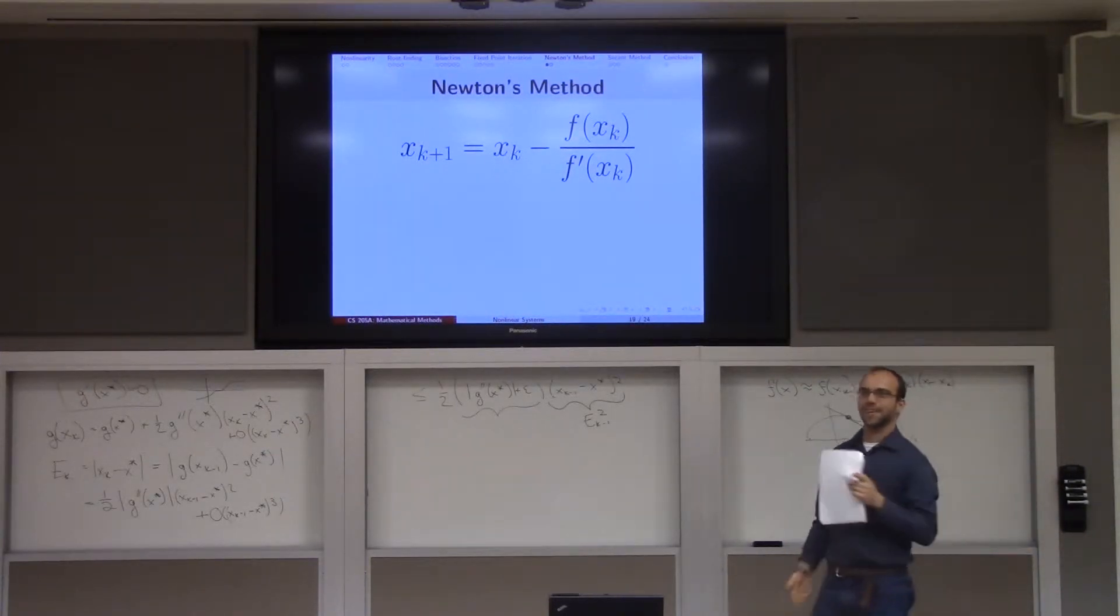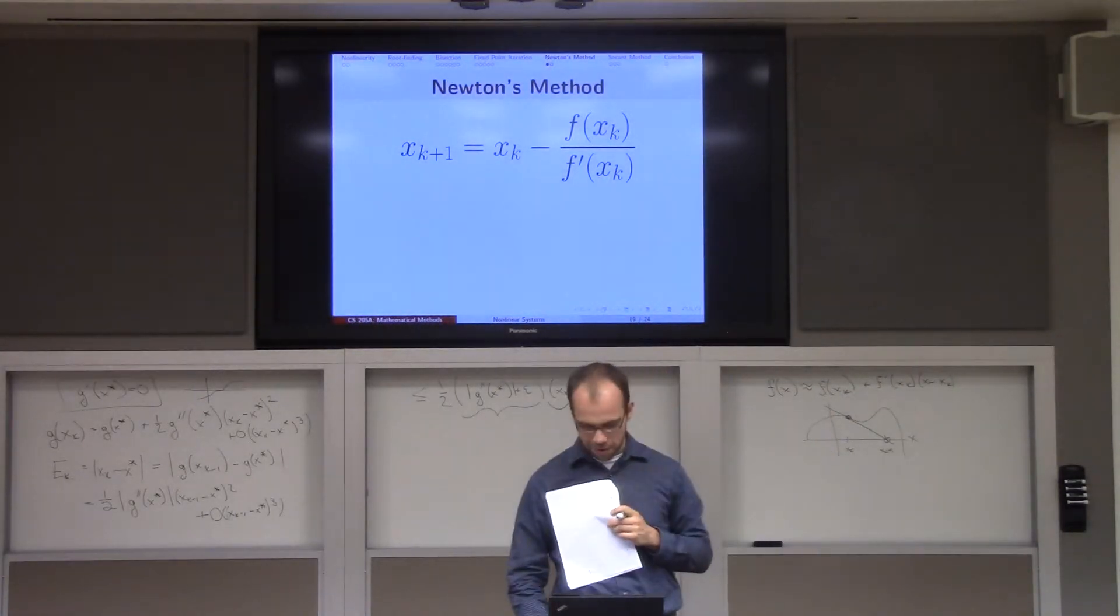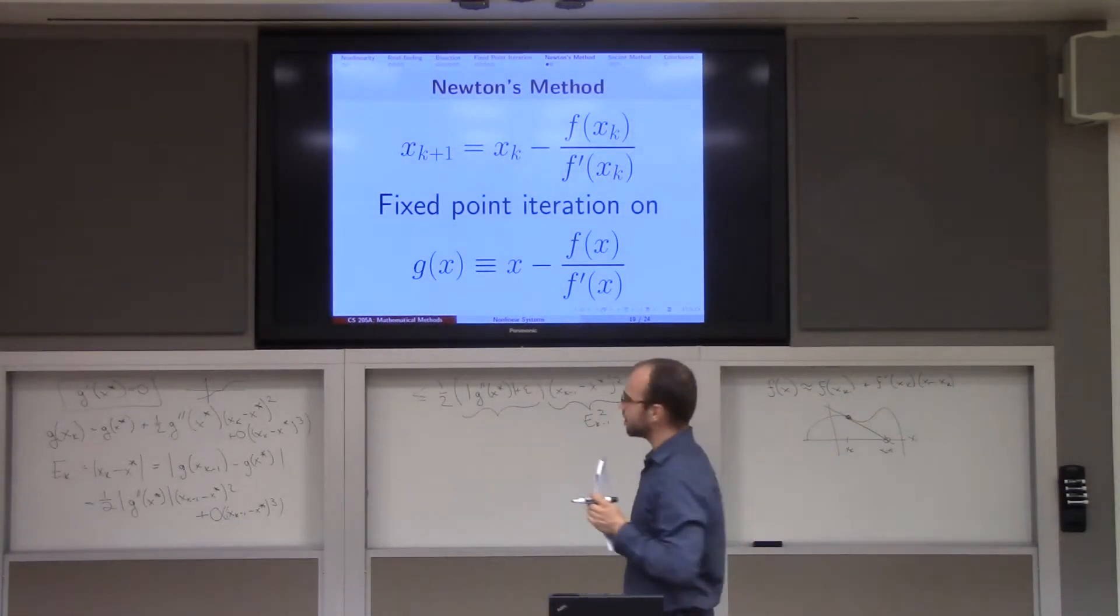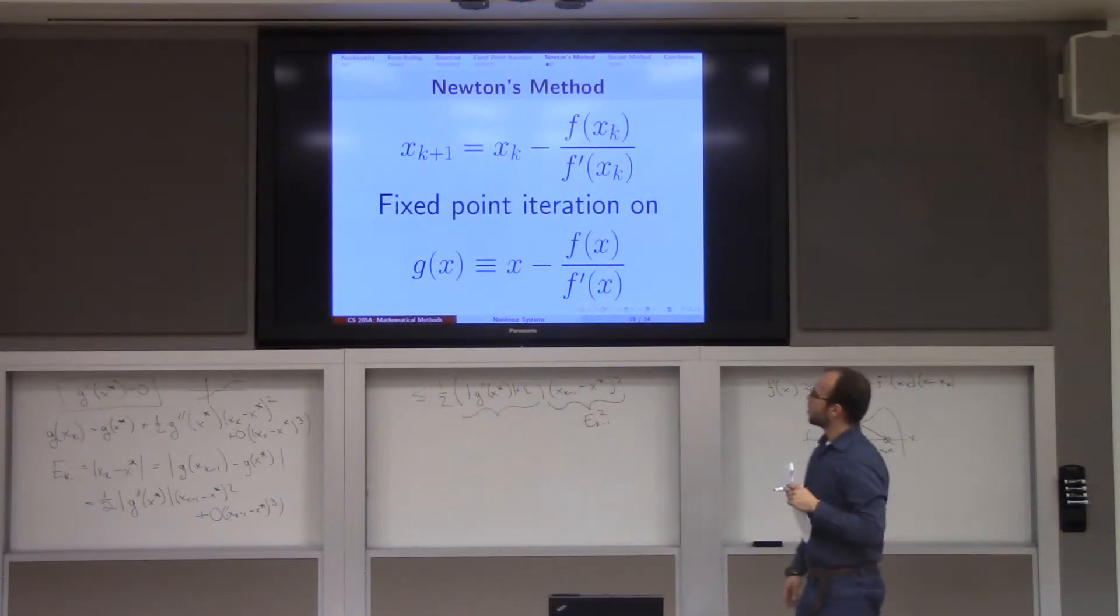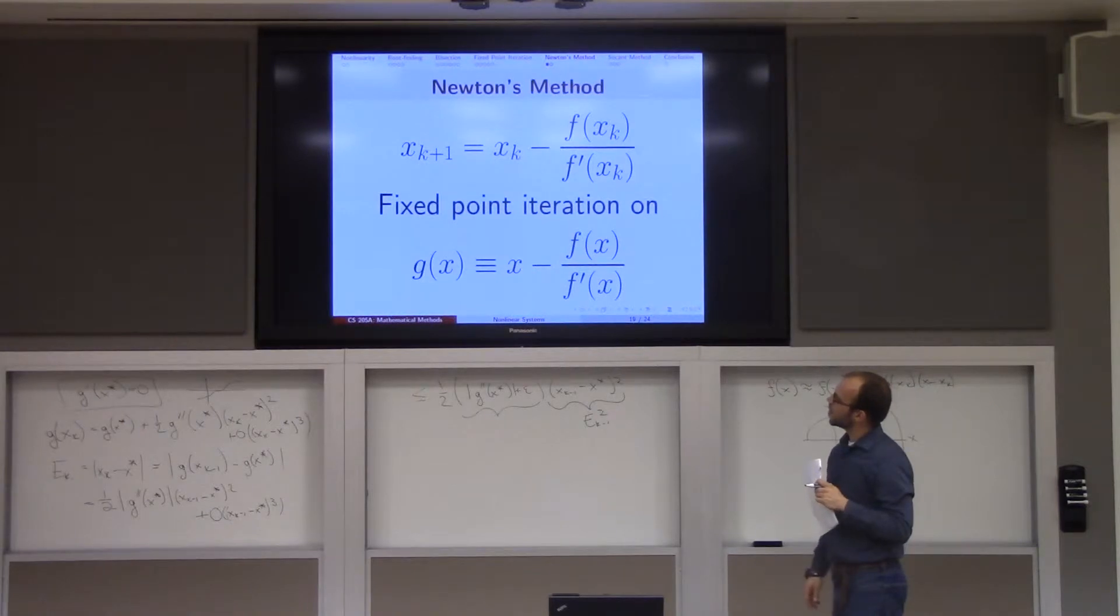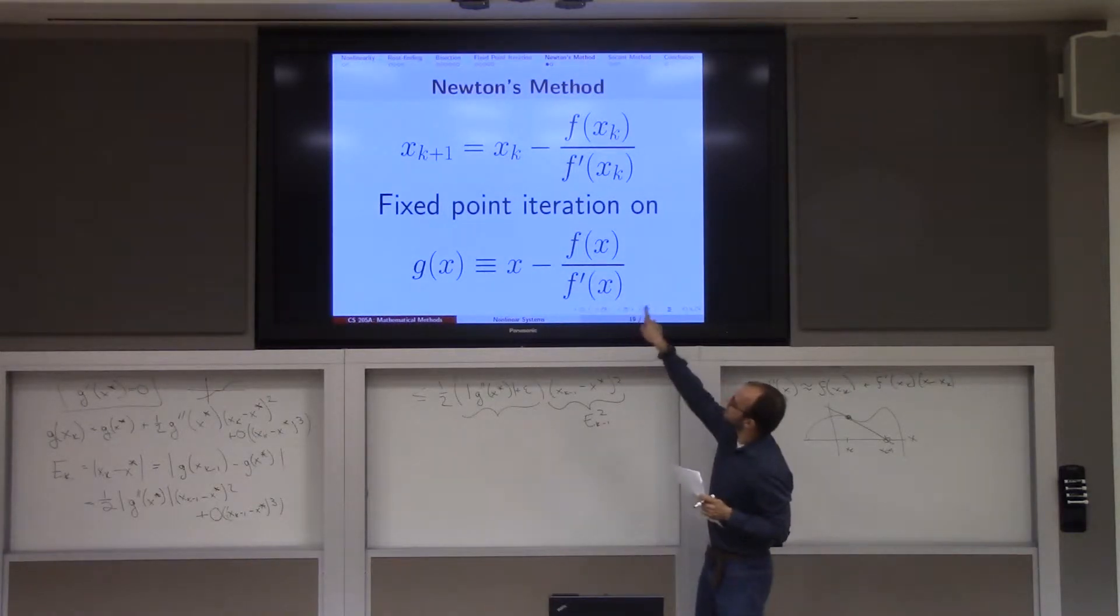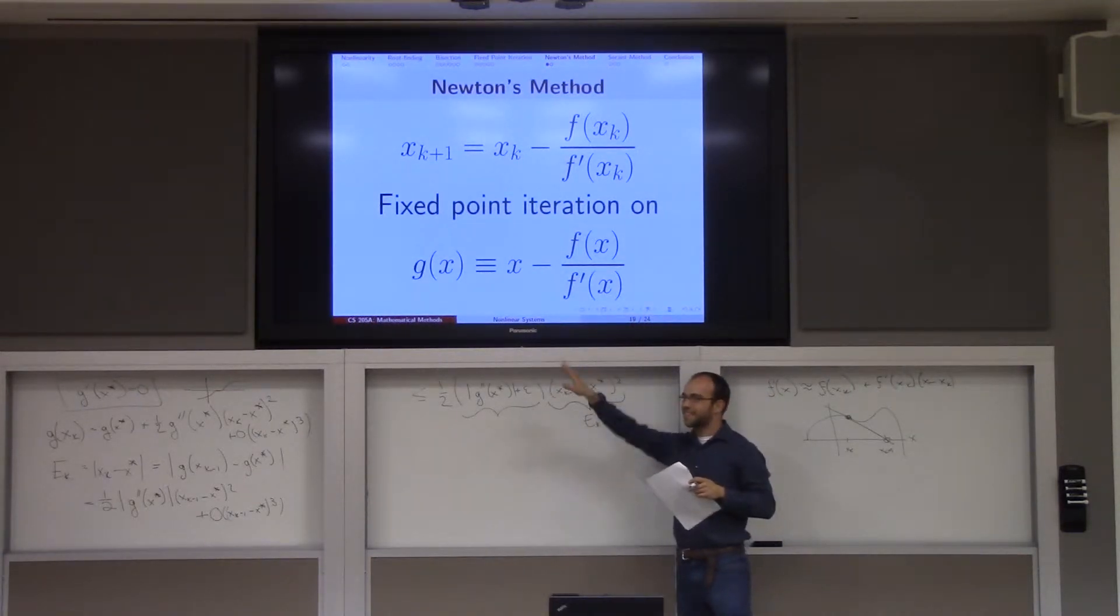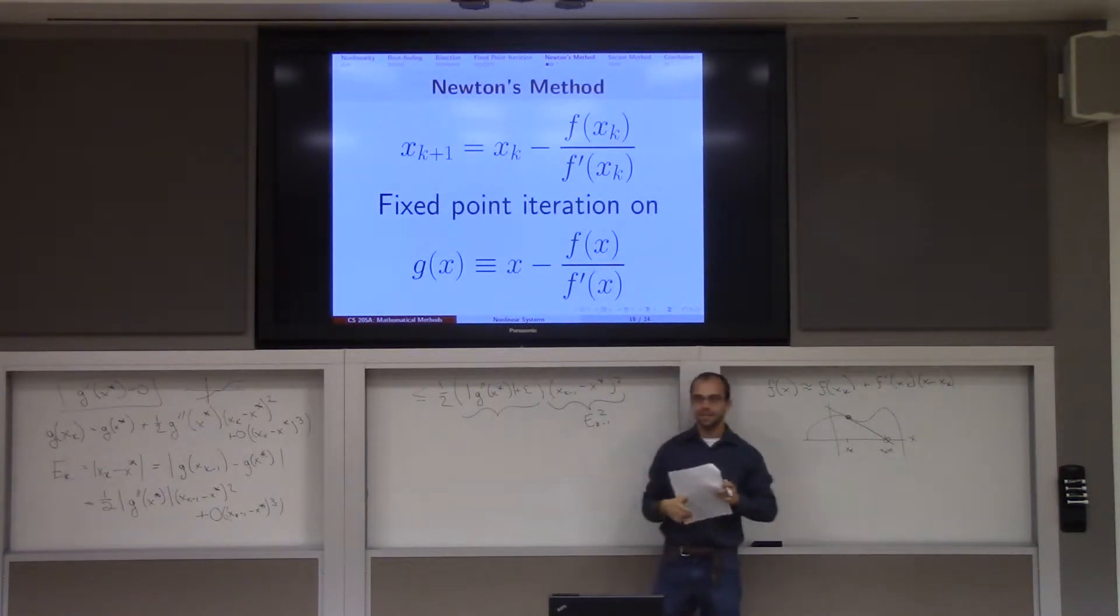Now, here's the cool thing. The reason we can go to all this analysis on fixed point iteration. Well, take a look. What do I want to have happen? Well, this is nothing more than fixed point iteration on this function that I'm defining called g. Why is that? Well, each time, I just keep plugging in a new x and throwing it into this x minus f over f prime business. I just define a new function, equal this, in terms of f.